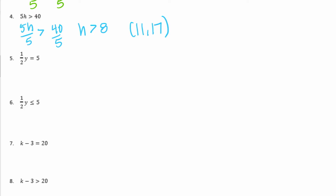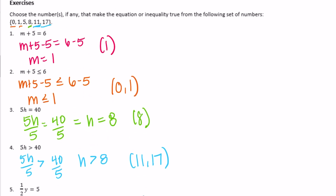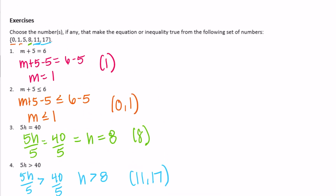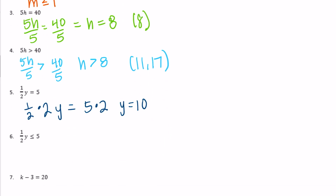Exercise 5: one half y equals 5. To counteract the one half, multiply both sides by 2: y equals 5 times 2, so y equals 10. Is there a 10 in our set? No, so none make this true.